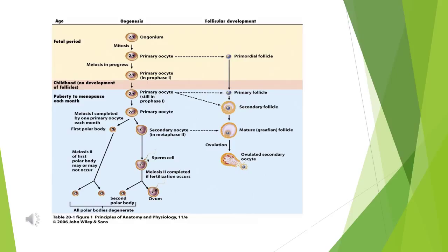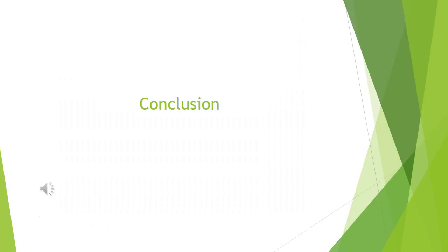This table shows an overview of the process of cell division in correspondence to follicular development. In conclusion, oogenesis is the creation of the ovum. Each stage of follicular development corresponds to a stage in the female menstrual cycle, with a close relation to the different stages of cell division. Oogenesis begins in fetal development and is carried out through a female's reproductive lifetime.